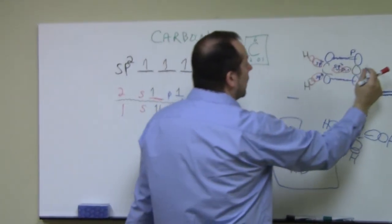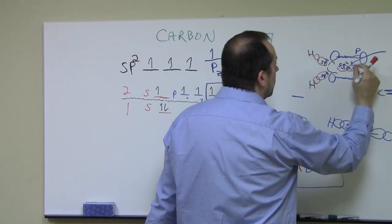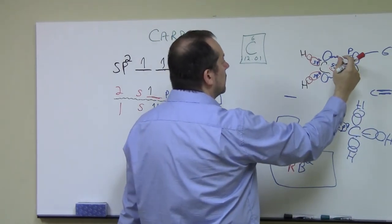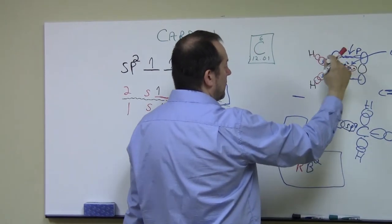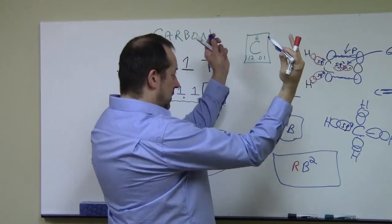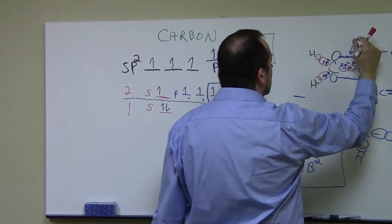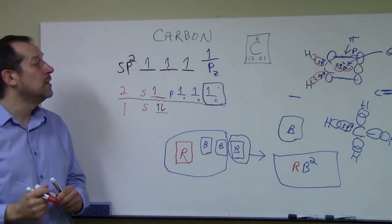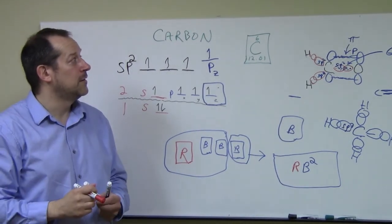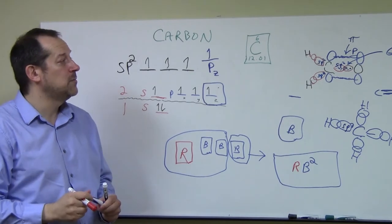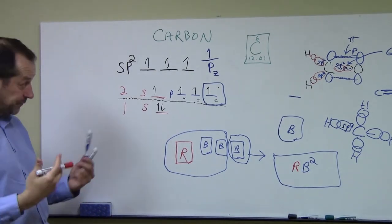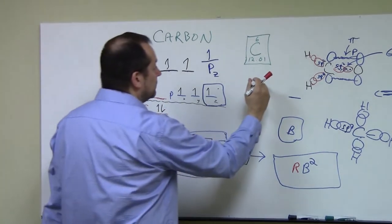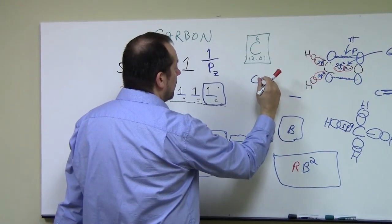Terminology-wise, the direct overlaps between hybrid orbitals are called sigma bonds, and the P orbital overlaps — the way they connect above and below — are called pi bonds. When you start seeing three-dimensional drawings and different categorizations of hybrid bonds, that's what you've got. Now it does get a little more complicated because carbon can also be in a triple bond situation.